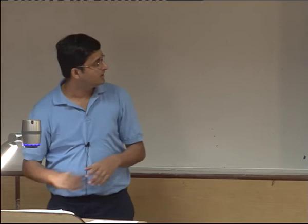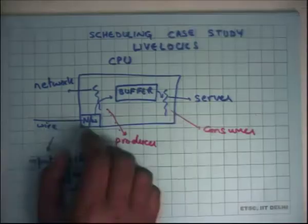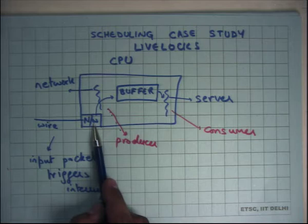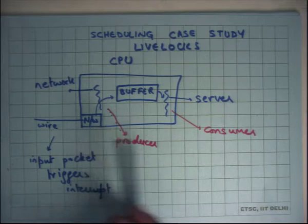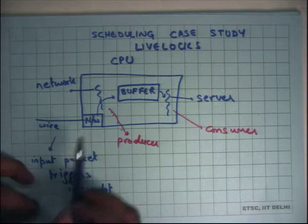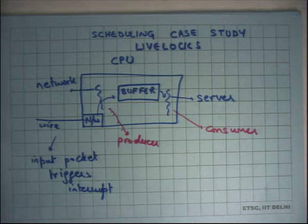Let's take this example. This box is a computer or CPU, connected to a network with a network card. Packets are coming in — so it's a server. It could be a web server or some kind of network server. It's receiving packets and sending replies — receiving a lot of requests and then sending replies to those requests.